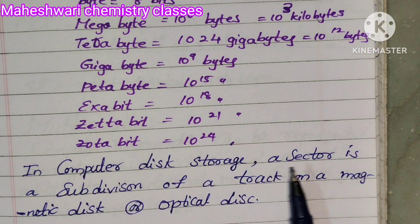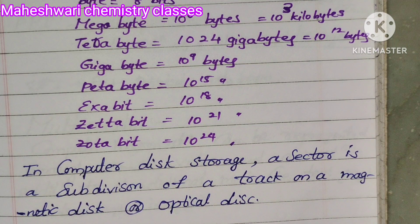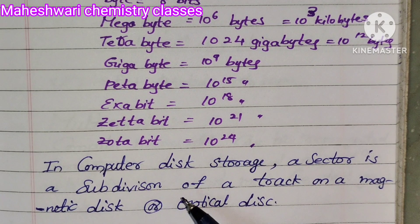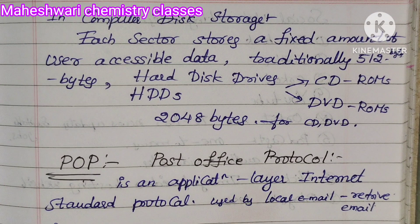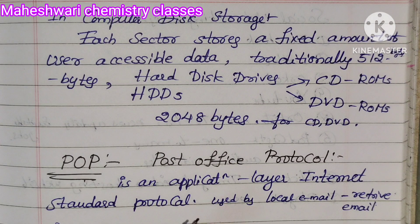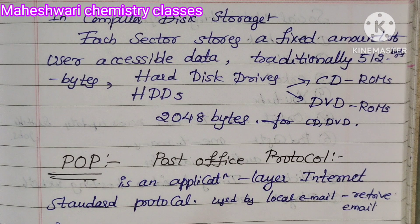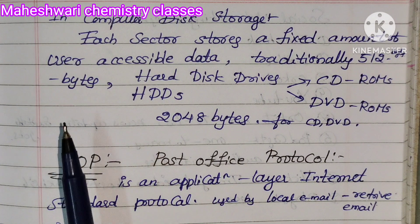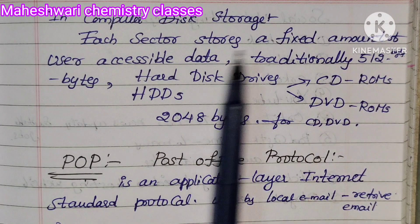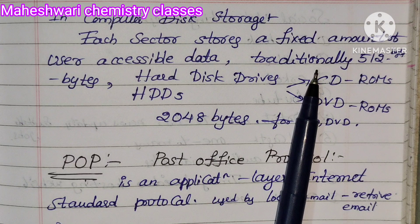In computer disk storage, a sector is a subdivision of a track on a magnetic disk or optical disk. Each sector stores a fixed amount of user-accessible data, traditionally 512 bytes.